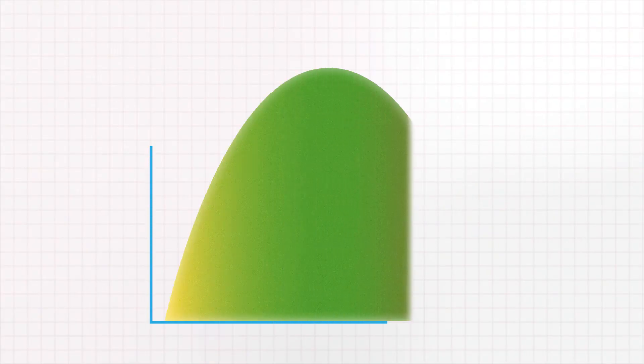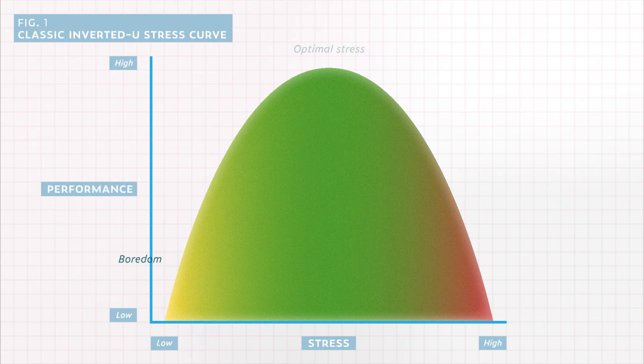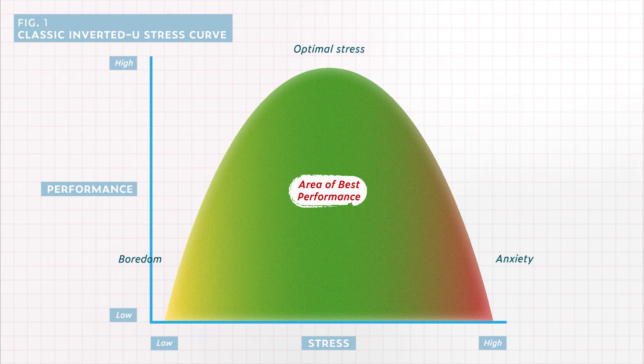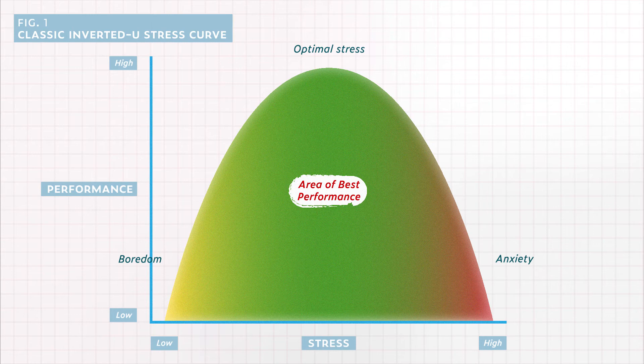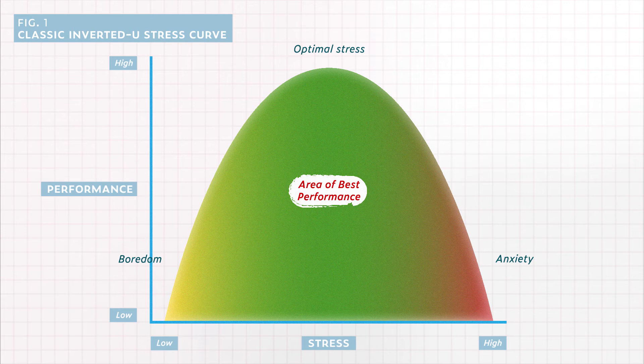Earlier, I showed you this inverted U-curve representing the relationship between stress and performance. Here, the middle is the sweet spot, and the curve is steep on either side. Since 1908, our understanding of stress has evolved beyond this curve. We now understand that individuals are able to adapt to environmental input, tolerating overload or underload without a substantial change in their performance capacity.